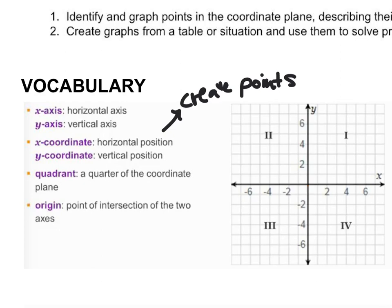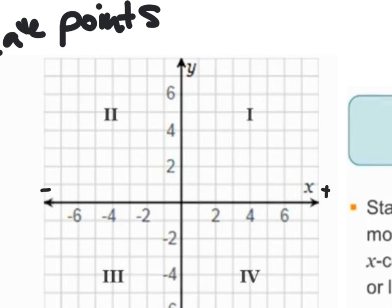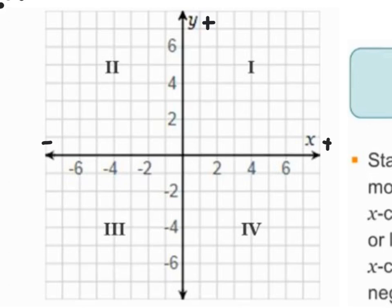Before we start plotting points, I want to talk about the x-axis. If you're anywhere from the origin over to the right, your x-value is going to be positive. If you go to the left from the origin, your x-value is going to be negative. Similarly on the y-axis, if you go up from the origin, your y-values are positive. If you go down from the origin, your y-values are negative.